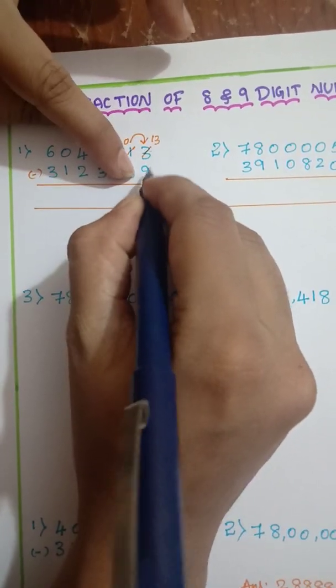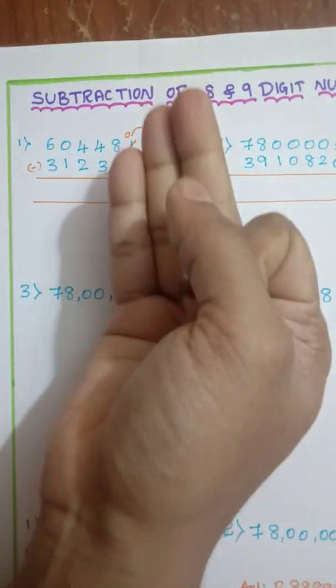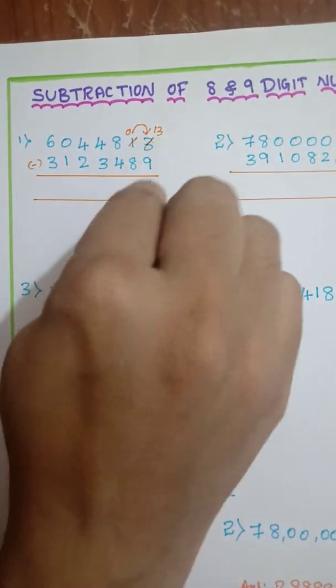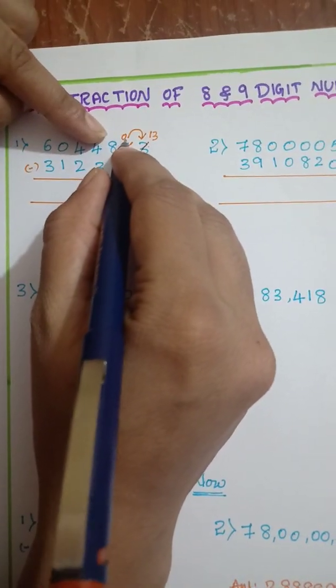See, 13 minus 9. So after 9, what will come? 10, 11, 12, 13. So 4 you will write here. And here we have 0.